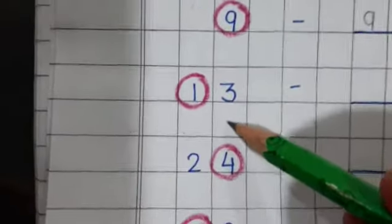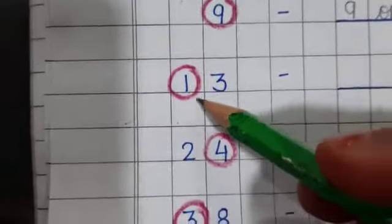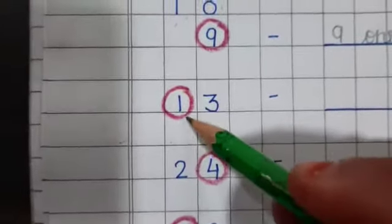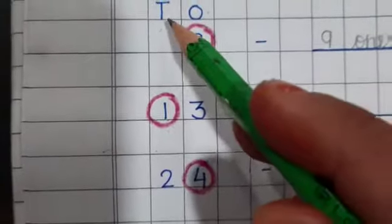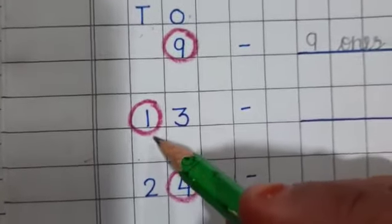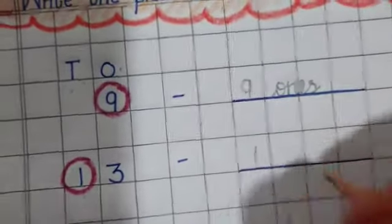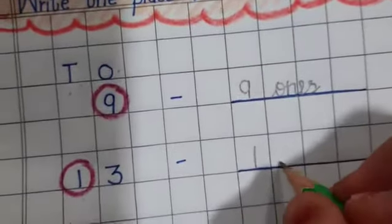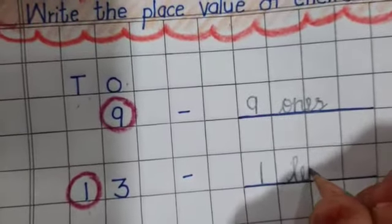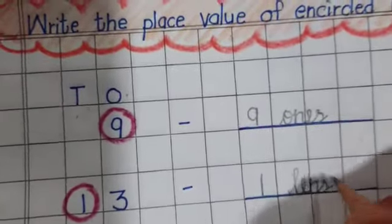Next. Which number is this? 13. Where is the circle? Around the number 1. And where is 1? Under the tens place. So what is the place value of number 1? 1 tens. And what does 1 ten mean? A group of 10 things. So we write: 1 tens.